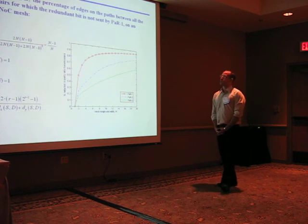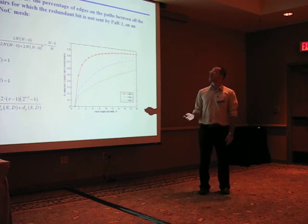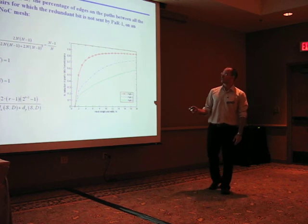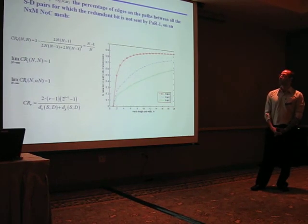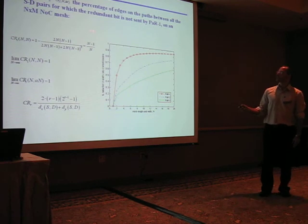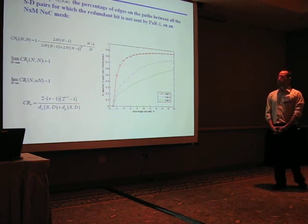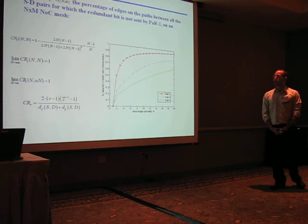To abstractly analyze, we denote by CR1 as cost reduction the percentage of edges on the path between all the source and destination pairs for which the redundant bit is not sent by power one on a NOC mesh. For example, we can see here the percentage of reduction in the redundant parity-based transmission versus the network.